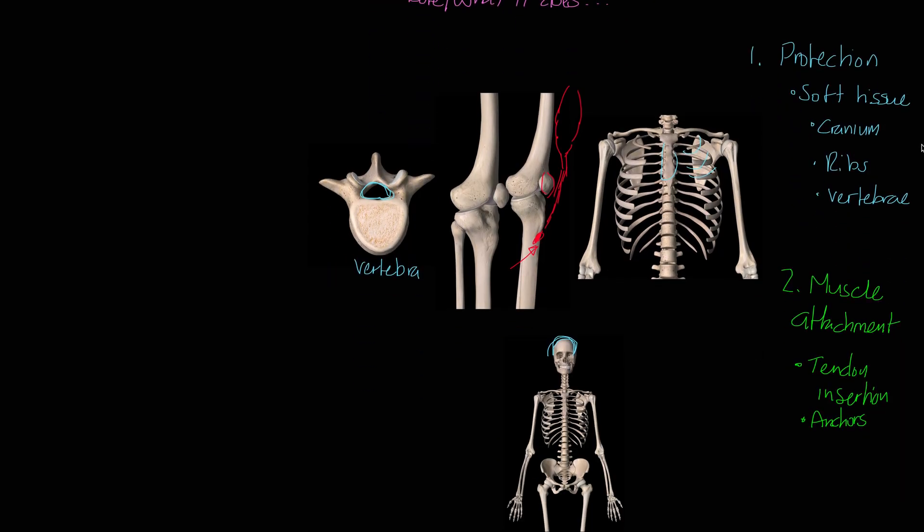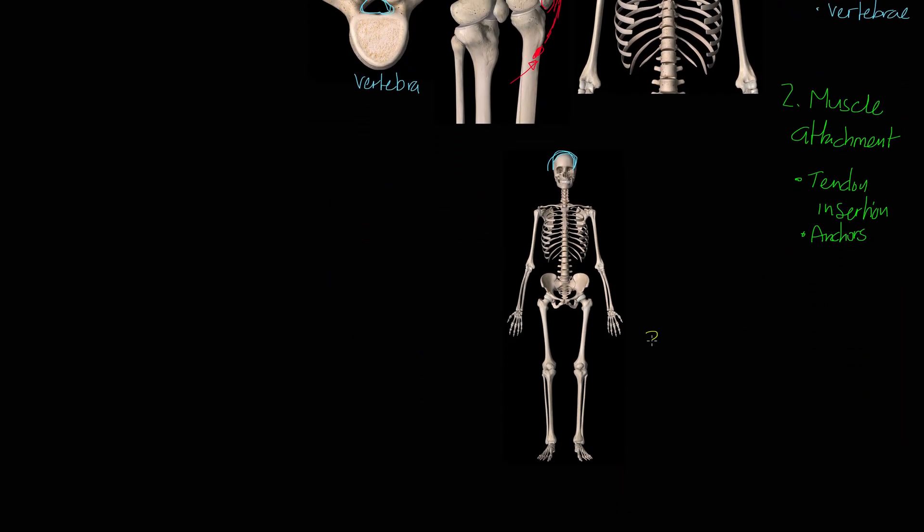Now, of course, we've also got movement in relation to joints. So we've also got joints for movement. Movement occurs at joints. Joints are what we call articulations, joining points for different bones. Let me write that in there. They are articulations, joining points.